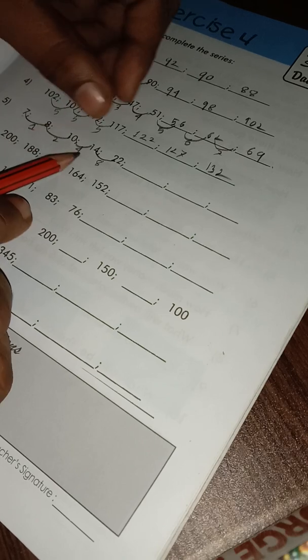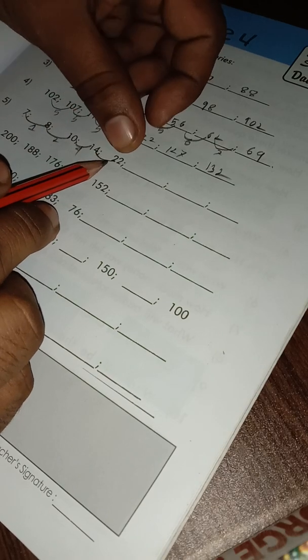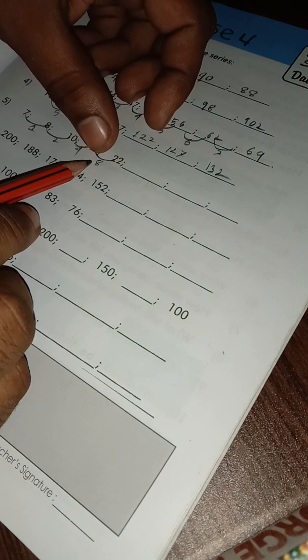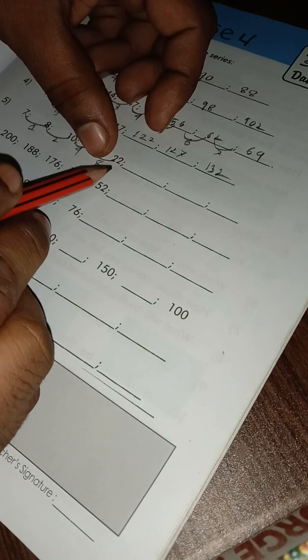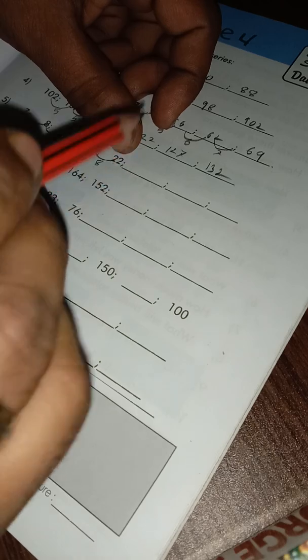8 multiple 2 plus 22, so 16. 16 plus 22 is equal to 38.